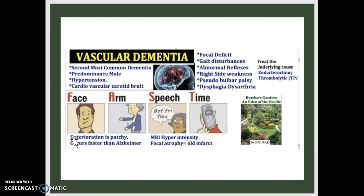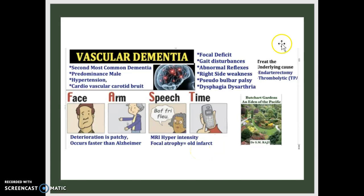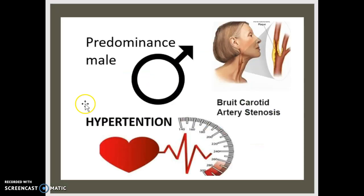The deterioration in vascular dementia is patchy and it occurs faster than Alzheimer's. On MRI, you will find hyperintensity and focal atrophy, also known as old infarcts. Treatment involves addressing the underlying cause and using thrombolytics.